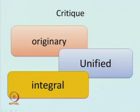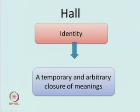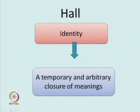Hall says — and I am very fond of this formulation — identity is a temporary and arbitrary closure of meanings. Identity is a closure of meaning, a closure of understanding who we are; but it is a temporary and arbitrary closure, in almost a deconstructive sense: you can never have arrived at a full understanding of identity. Whenever you think you have arrived at a meaning or understanding of identity — your own or others' — it is always temporary, provisional.